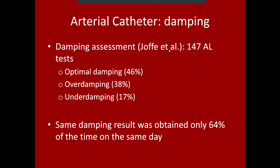How often are lines appropriately damped? There's an interesting study by Jaffe and colleagues looking at 147 arterial lines in their ICU. They found that about 46% of the time A-lines were optimally damped, about 38% of the time they were overdamped, and 17% of the time they were underdamped.